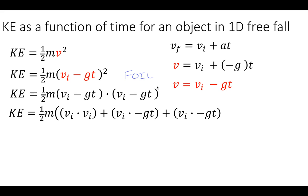Now we'll multiply out the last terms, that's negative gt times negative gt. And now we can just simplify some of this. So, vi times vi is vi squared.